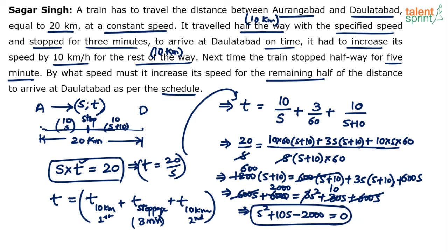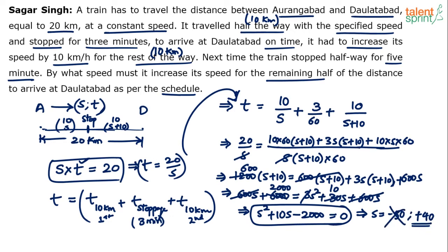Solving the quadratic equation S² + 10S - 2000 = 0, we factor as (S + 50)(S - 40) = 0, giving S = -50 or S = 40. Since speed cannot be negative, the speed S is equal to 40 kilometers per hour.